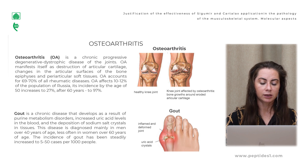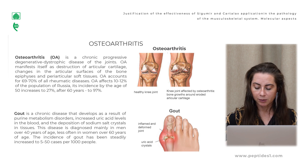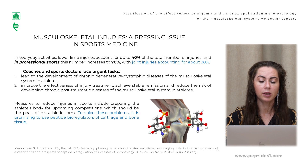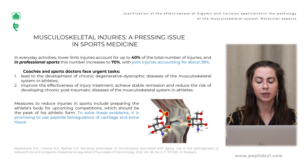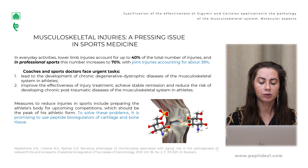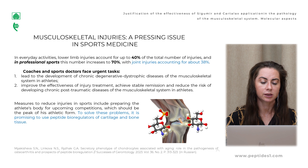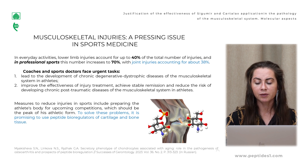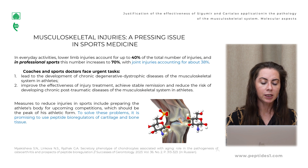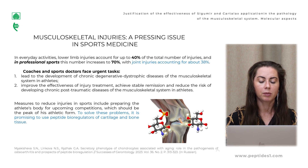The incidence of gout has been steadily increasing to 15 cases per 1,000 people. In everyday activities, lower limb injuries account for up to 14% of the total number of injuries, and in professional sport this number increases to 17%. Joint injuries account for about 38%. Coaches and sport doctors face urgent tasks: first, to prevent the development of chronic degenerative dystrophic disease of the musculoskeletal system in athletes; second, to improve the effectiveness of injury treatment, achieve stable remission, and reduce the risk of chronic post-traumatic disease. To solve these problems, it is promising to use peptide bioregulators of cartilage and bone tissue.